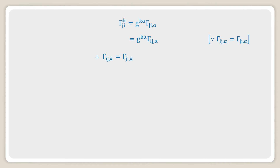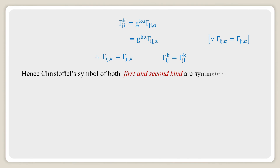Therefore, Gamma_{IJ,K} equals Gamma_{JI,K}, and Gamma^K_{IJ} equals Gamma^K_{JI}. The first is the Christoffel Symbol of the first kind and the latter is the Christoffel Symbol of the second kind. Hence, Christoffel Symbols of both the first and second kind are symmetric.